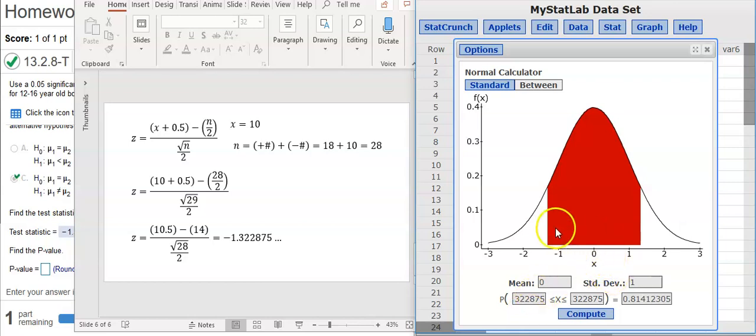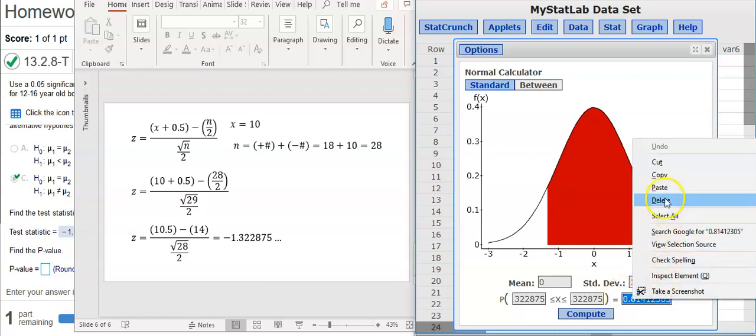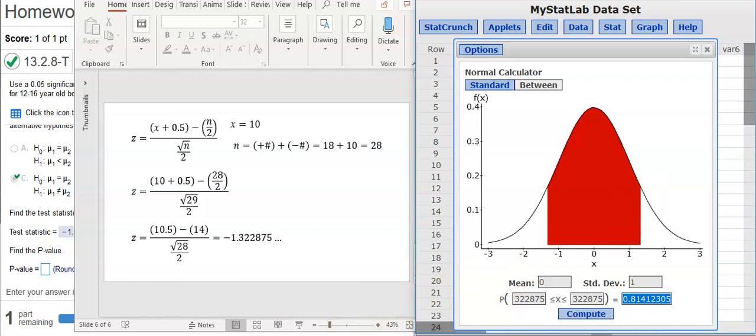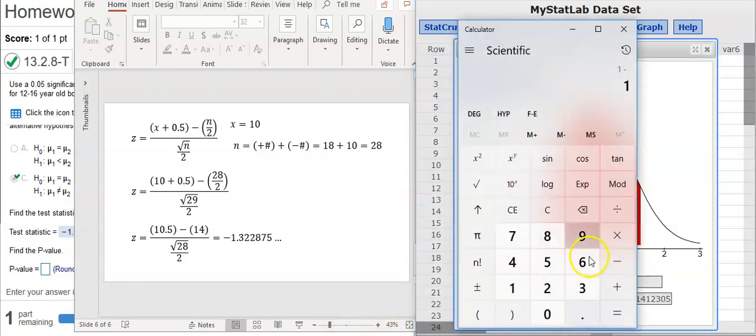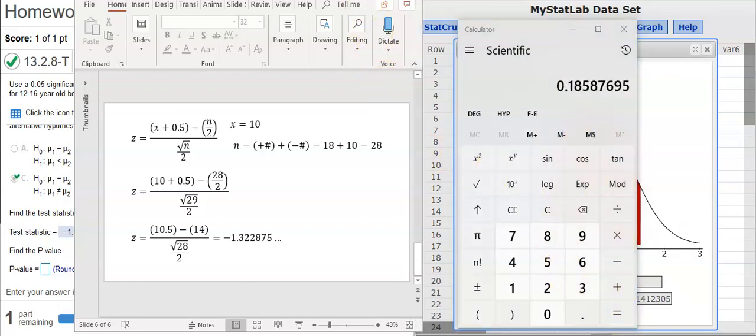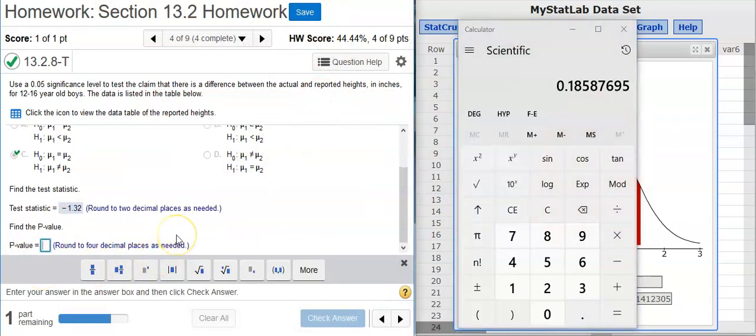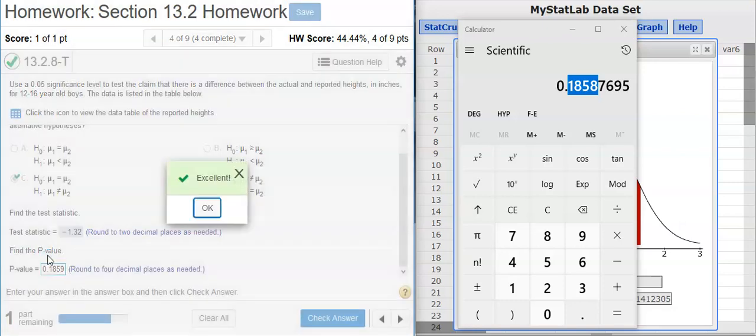And now StatCrunch has calculated the area in between the tails. The p-value is the area in the tails, so I want to take this number and in my calculator I'm going to subtract that from 1. And there's my p-value. Massed around to four decimal places, so let's see, that brings me out to there. Excellent.